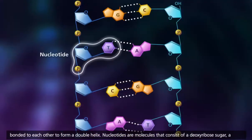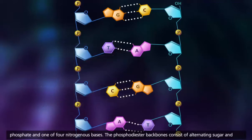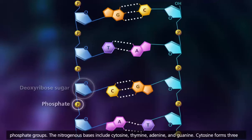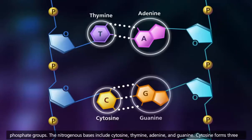Nucleotides are molecules that consist of a deoxyribose sugar, a phosphate, and one of four nitrogenous bases. The phosphodiester backbones consist of alternating sugar and phosphate groups. The nitrogenous bases include cytosine, thymine, adenine, and guanine.